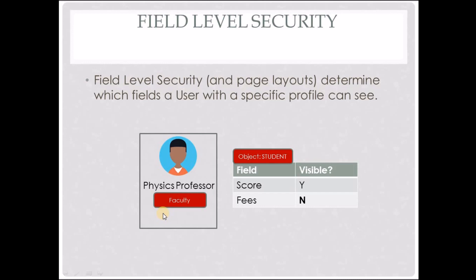Now let's move on to our next topic, which is field level security. Field level security determines which field a user with a specific profile can see. For example, we have a physics professor with the faculty profile and an object called student with two fields: score and fees. We do not want to show the fees field to the physics professor, but the score field must be visible. We can handle this using field level security, making the fees field not visible to the faculty profile.